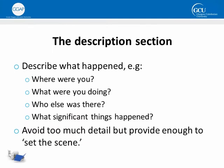The first part of your reflective account, the description, is the easy part. This is the starting point for your writing regardless of what model of reflection you're following. Here you want to describe what happened — for example, where you were, what you were doing, who else was there and what significant things happened. The key here is not to provide too much detail but enough to just set the scene. A common mistake here is to use up far too much word count with too much unnecessary detail.